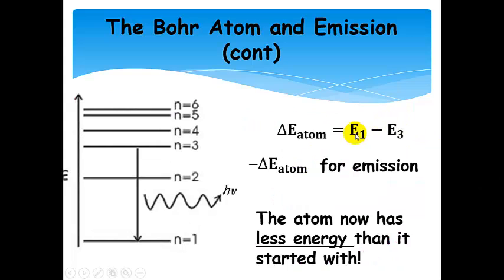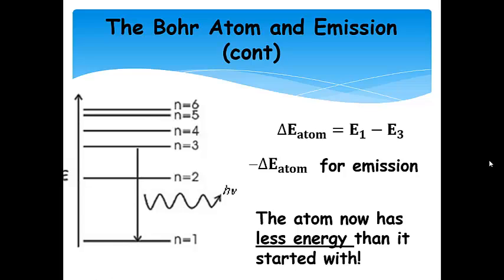E final is n equals 1, minus E initial — so E final minus E initial gives us a negative energy change. Going from n equals 3 to n equals 1, we're emitting and releasing energy. The atom now has less energy than it started with. It went from a higher energy state to a lower energy state, and in the process it released or emitted energy in the form of a photon. So the change in energy for the atom is negative for emission.